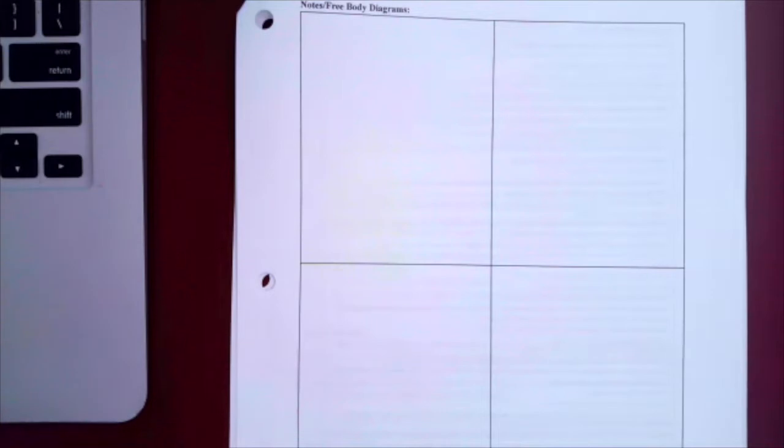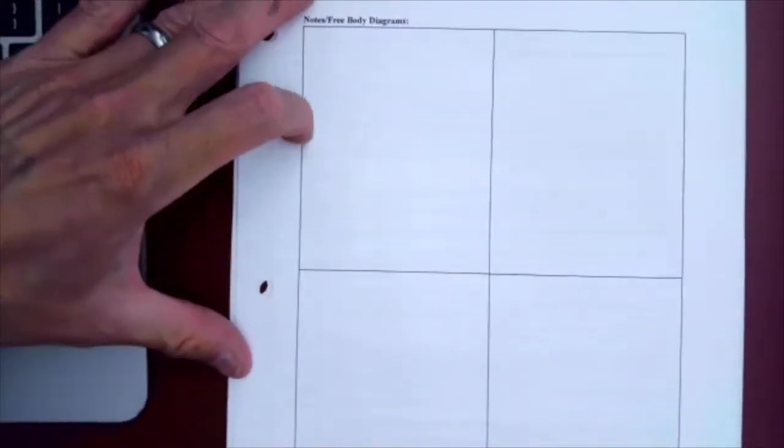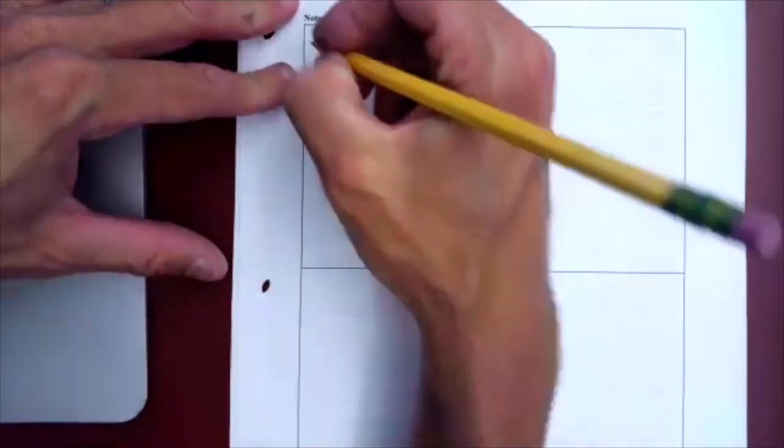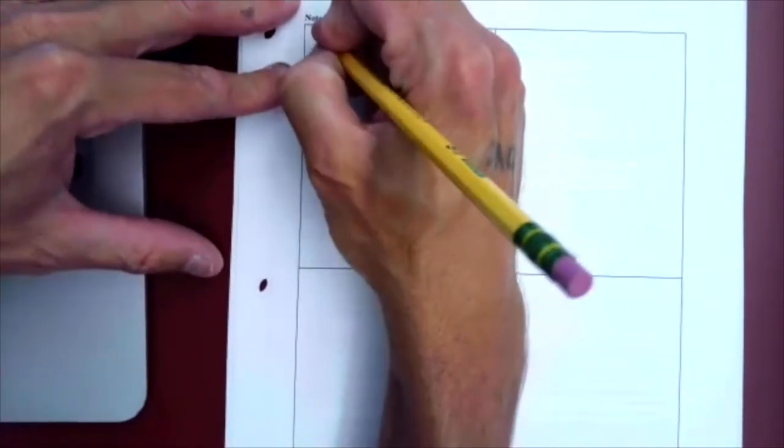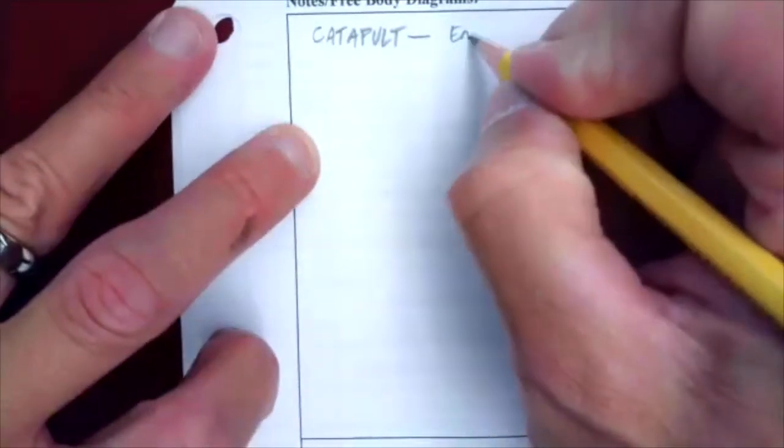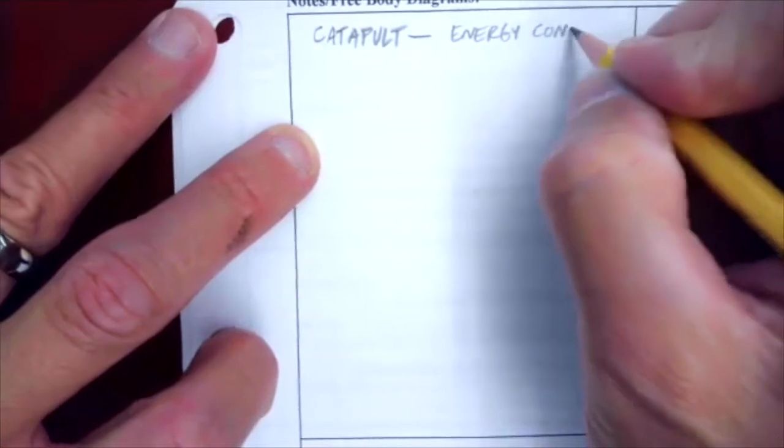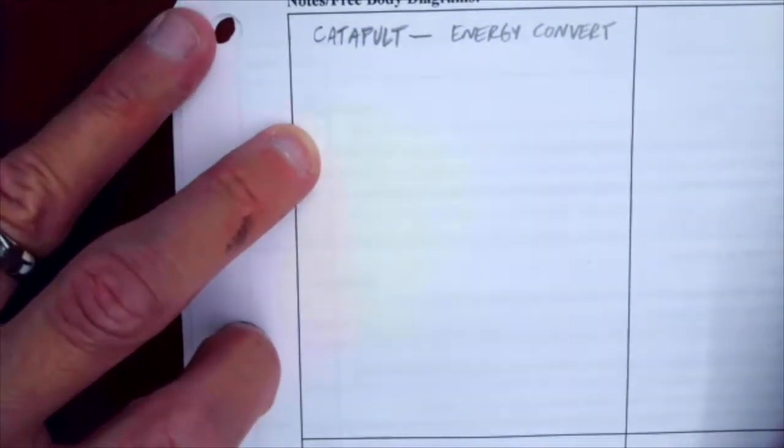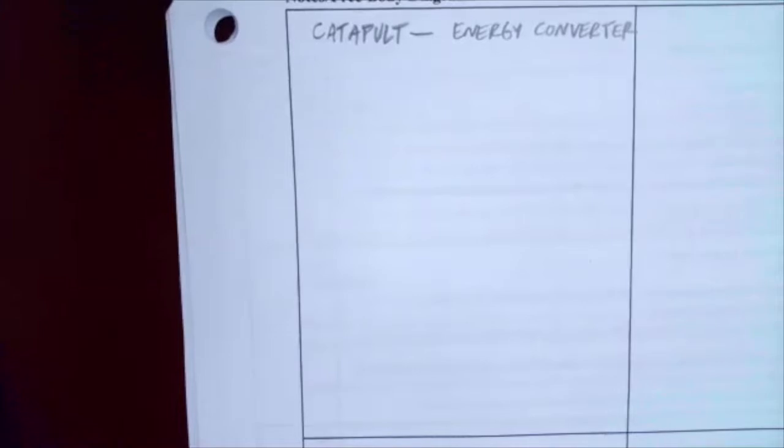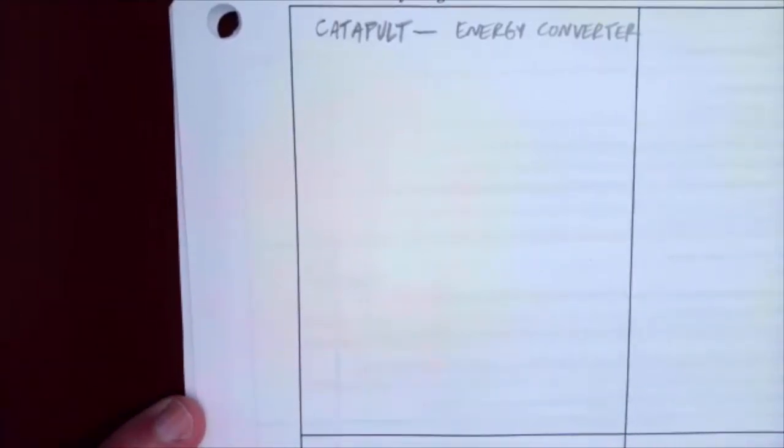Energy is the ability to do work. That definition was in our last lab and I didn't require it in the introduction, so I'm going to require it in this one. So I'm just going to say here, I'm going to say catapult right here and then I'm going to call it an energy converter.